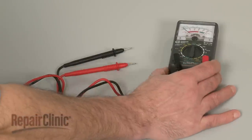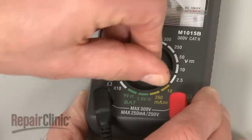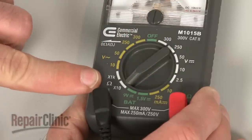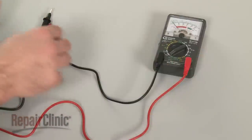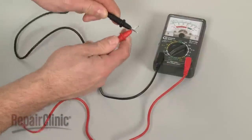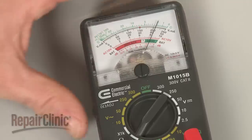When using an analog model, first rotate the range selection dial to the lowest setting for ohms of resistance. Then calibrate the meter by pinching the probes together while adjusting the needle to read zero.